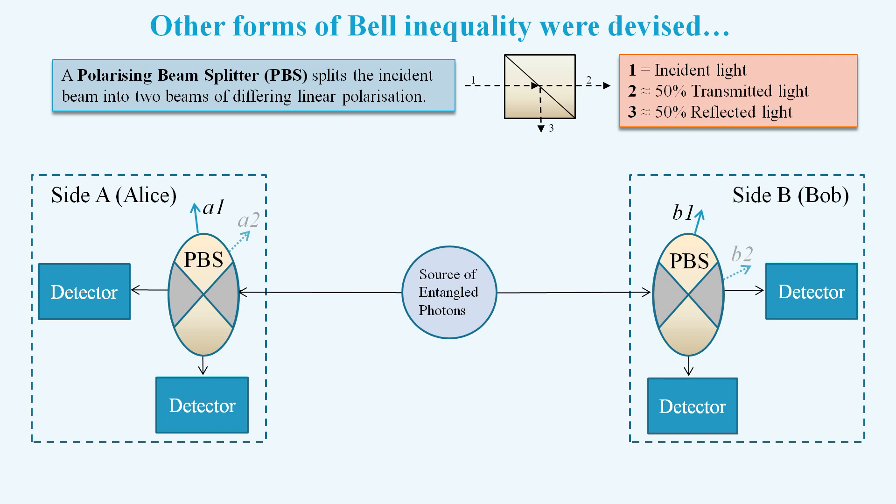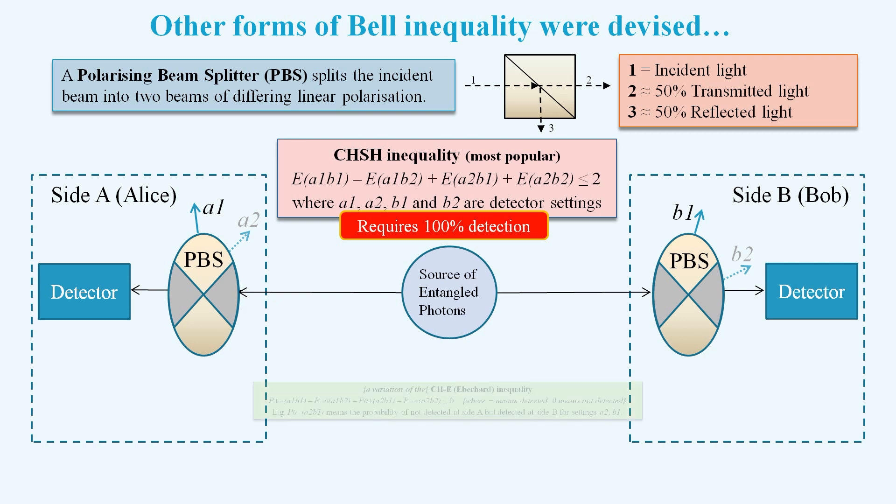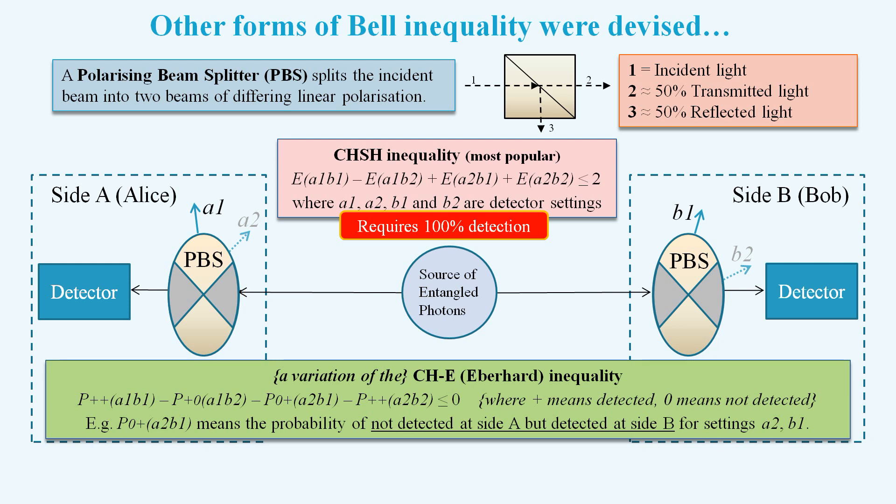Other forms of Bell inequality were devised, the most popular being known as a CHSH inequality. This inequality requires 100% detection, and this cannot be achieved in a photon-based experiment. But this inequality was used by the first of the three loophole-free experiments, which was based on the measurement of electron spin. But the second and third loophole-free experiments were based on photons, and so they used just one detector at each side. Then they used an inequality known as the Eberhard inequality. This uses some counts of where only one of an entangled pair of photons is detected. With these photon-based experiments, could the observed results be explained by classical physics?